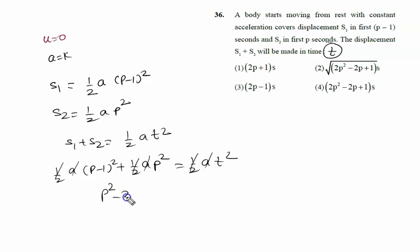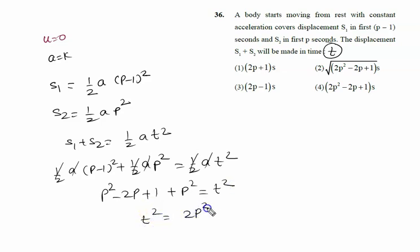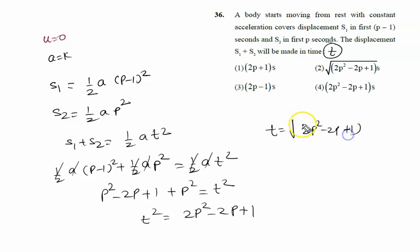Expanding (p minus one) squared gives p squared minus 2p plus 1. So p squared minus 2p plus 1 plus p squared equals t squared, which means t squared equals 2p squared minus 2p plus 1. Therefore, t equals the square root of (2p squared minus 2p plus 1) seconds. The right answer to this problem is option: t equals root of (2p squared minus 2p plus 1) seconds.